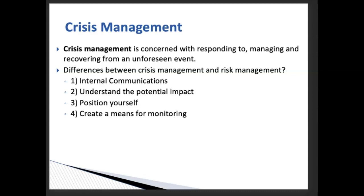You also need to understand the potential impacts: coaches, general managers, team members, fans, and the community will all be impacted. Think about how to communicate with different stakeholders. The third strategy is to position yourself — as a general manager, if one of your athletes fails a doping test, you need to clarify your organization's position: do you prohibit athletes from using performance-enhancing drugs? If so, how are you going to deal with the violation? Position yourself clearly.